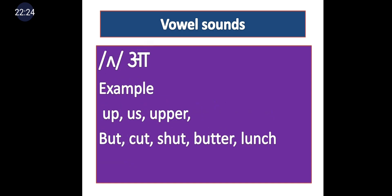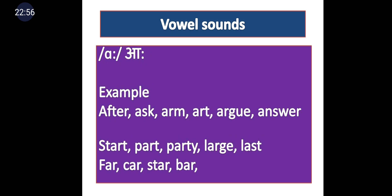The /ʌ/ vowel — an abrupt, short 'a' sound, like an inverted V. Examples initially: up, us, upper — we used to say 'up,' 'us,' 'upper' wrongly; the correct form is 'ʌp,' 'ʌs,' 'ʌpər.' Medially: but, cut, shut, lunch — we wrongly say 'but,' 'cut'; the correct pronunciation is 'bʌt,' 'kʌt.' This is how we have been mispronouncing these words all along.